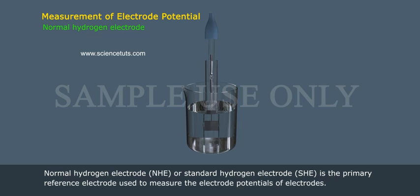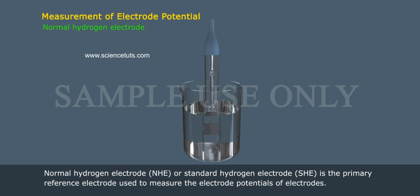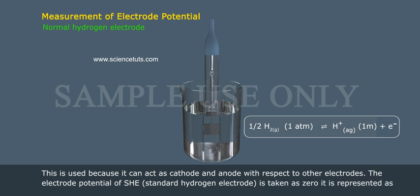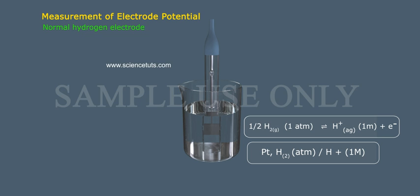The Normal Hydrogen Electrode (NHE) or Standard Hydrogen Electrode (SHE) is the primary reference electrode used to measure the electrode potentials of other electrodes. It is used because it can act as both cathode and anode with respect to other electrodes. The electrode potential of the Standard Hydrogen Electrode (SHE) is taken as zero.